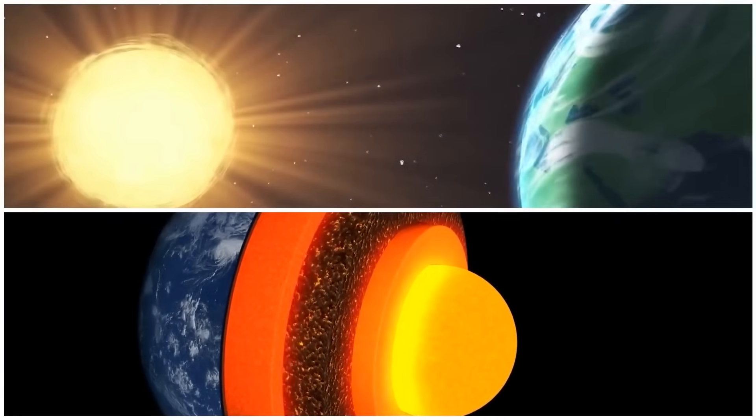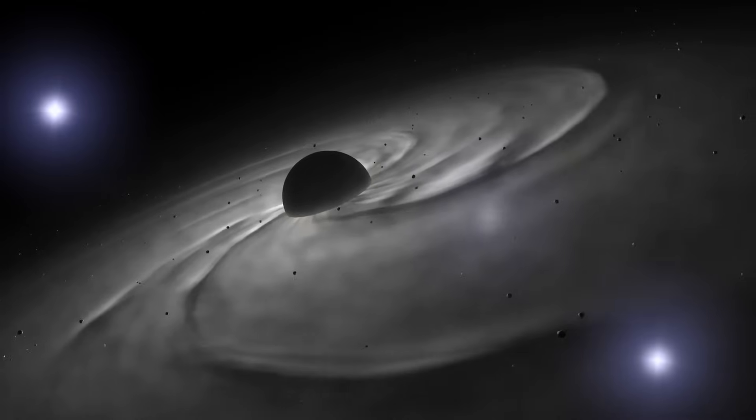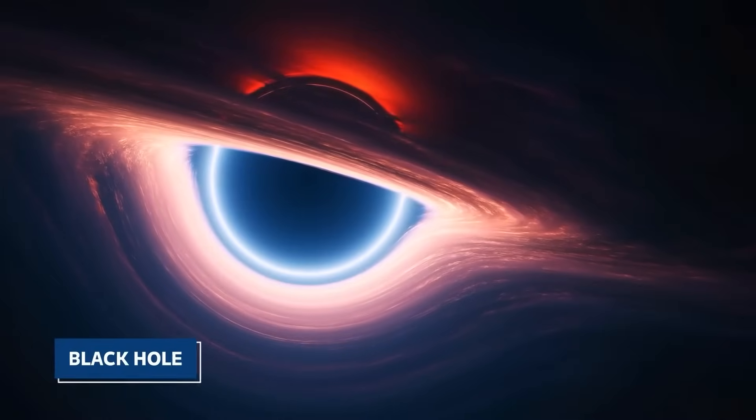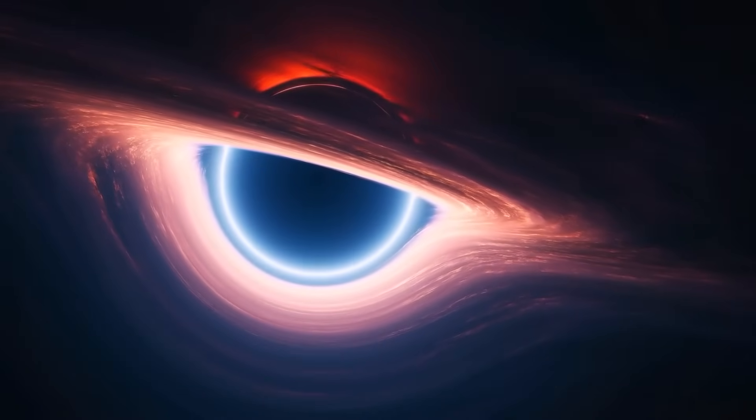If the core is sufficiently massive, it could collapse under its own gravity, giving rise to a black hole. This entity would exert such a tremendous gravitational pull that not even light could escape its grasp.